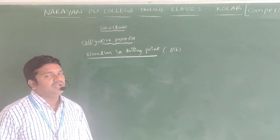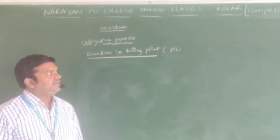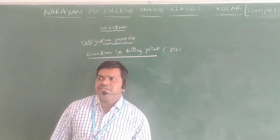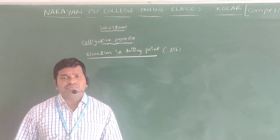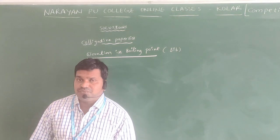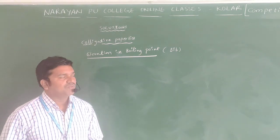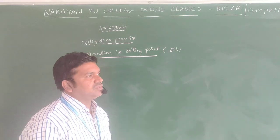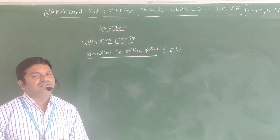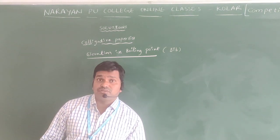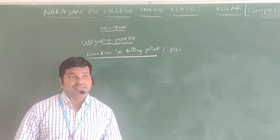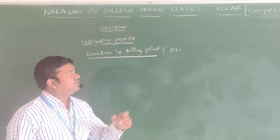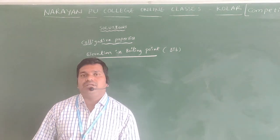The next Colligative Property is Elevation in Boiling Point, represented by delta Tb. The boiling point is the temperature at which the vapor pressure of the liquid becomes equal to atmospheric pressure. When a non-volatile solute is added to a volatile solvent, the vapor pressure of the solution decreases, and therefore the boiling point of the solution increases. This increase in boiling point is called Elevation in Boiling Point, denoted by delta Tb.